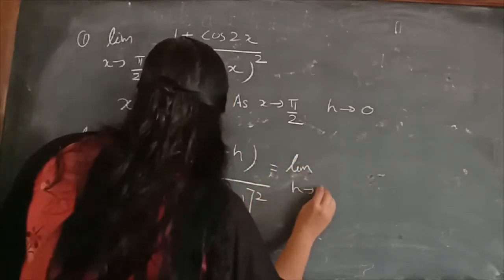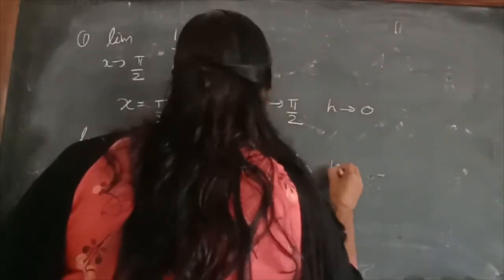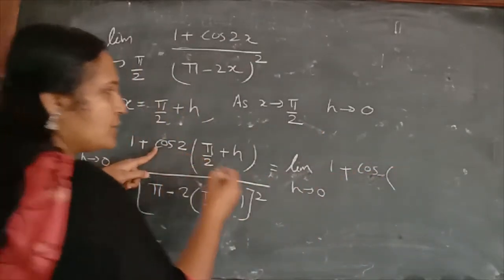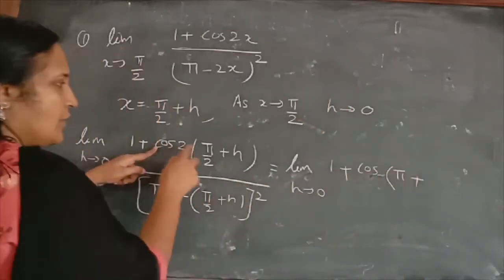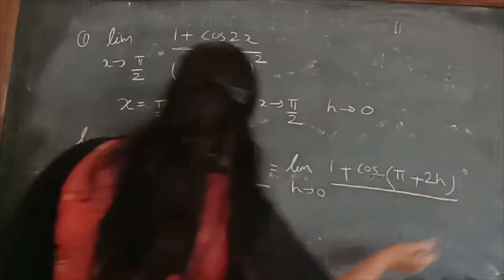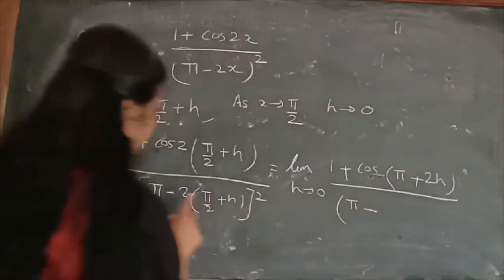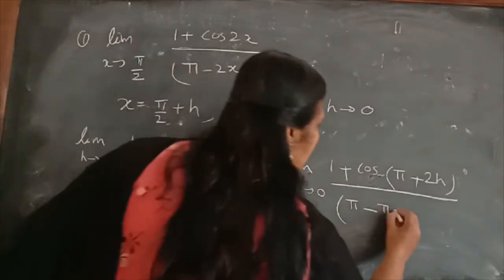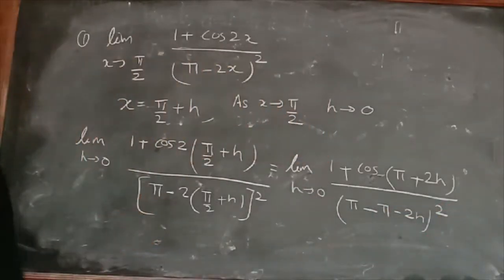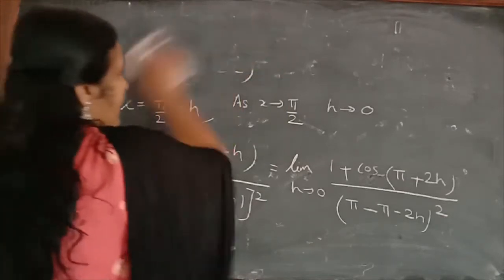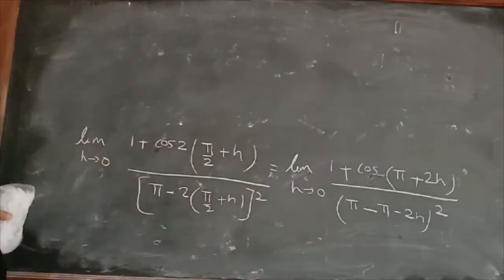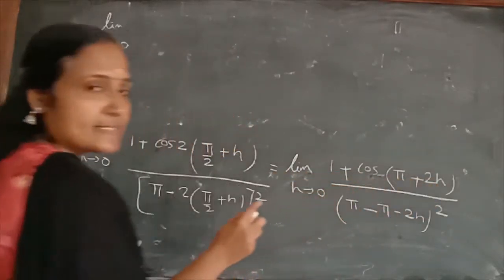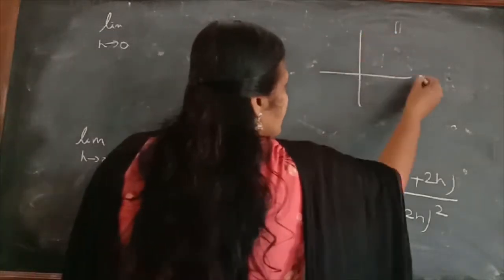We simplify: limit h tends to 0 of (1 + cos(π + 2h)) / (π − π − 2h)². The 2 multiplies inside to give cos(π + 2h) in the numerator, and π − π cancels in the denominator leaving (−2h)² = 4h². Now cos(π + 2h) — since we are in the third quadrant — cos is negative.